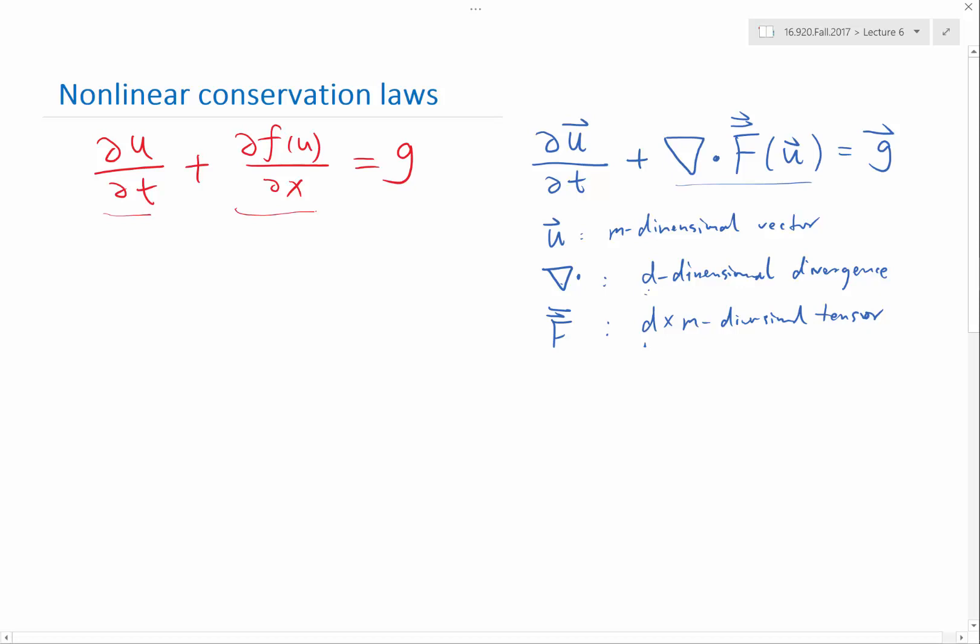d would be 3 because the spatial dimension is 3. So Euler equation is a nonlinear conservation law.